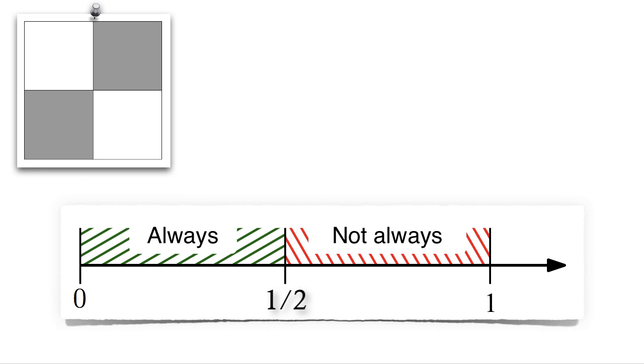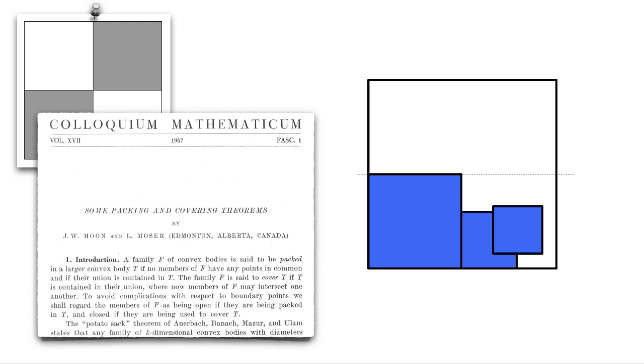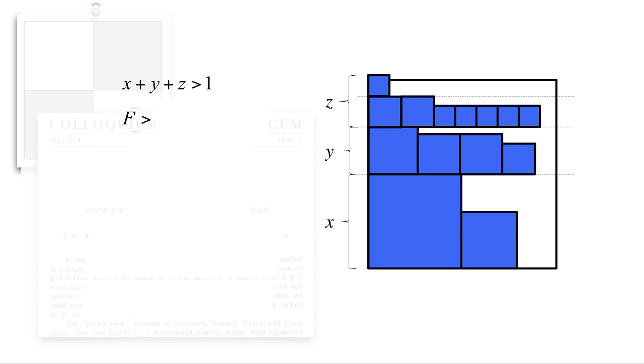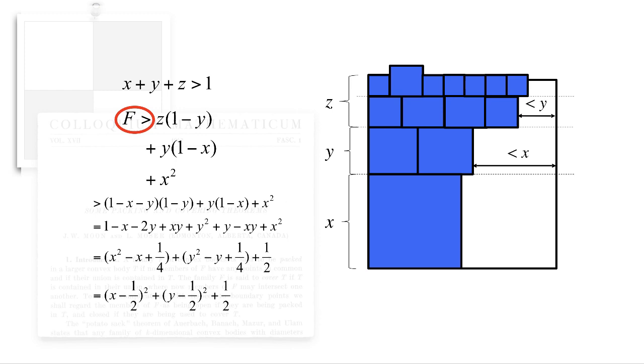For packing squares into a square, it is easy to see that the critical packing density is at most one half. It has been known since 1967 that this is indeed tight, when Moon and Mosa gave an algorithmic proof. After sorting the squares according to decreasing size, they pack items greedily into horizontal shelves. If the items cannot be packed in this manner, it follows by relatively simple algebra that their total area exceeds one half.